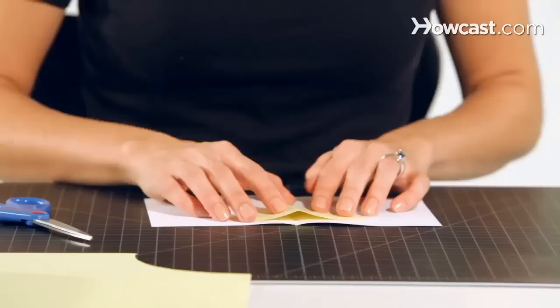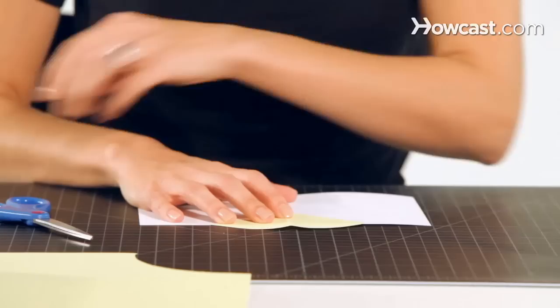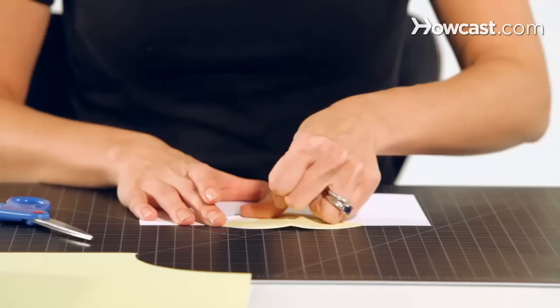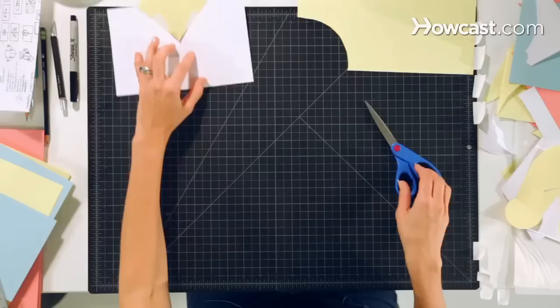And so take the base page and the v-fold and line up the center points. And tape down the edges. So now we have a v-fold.